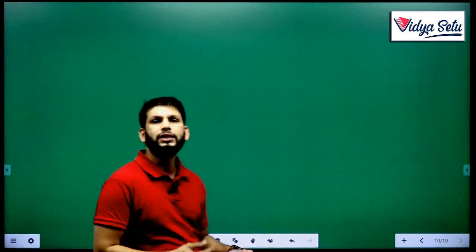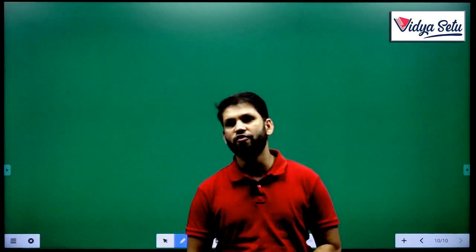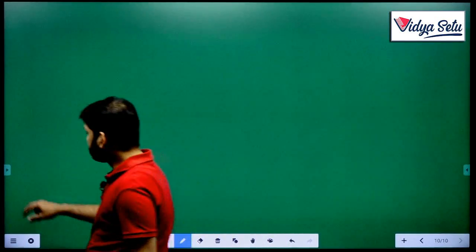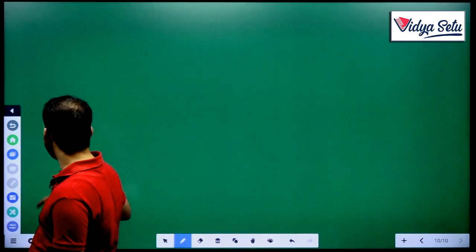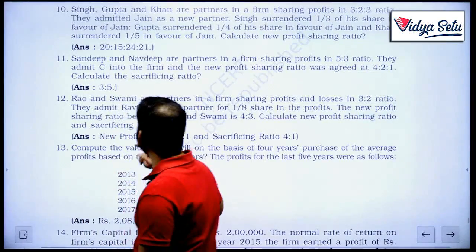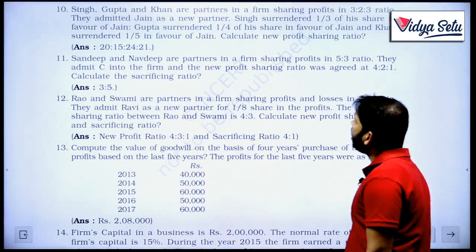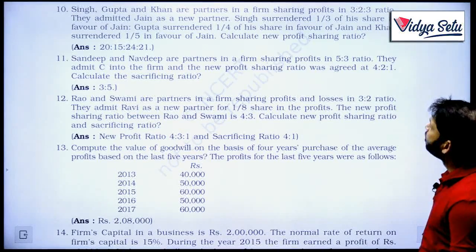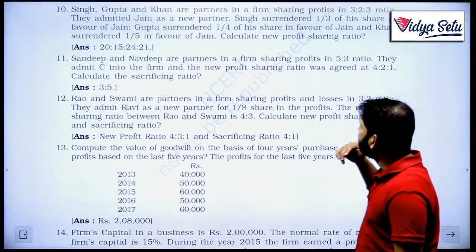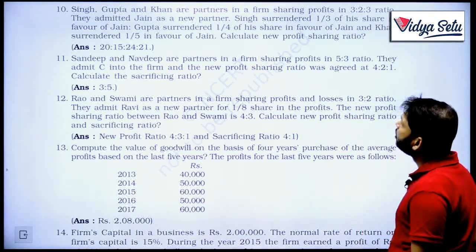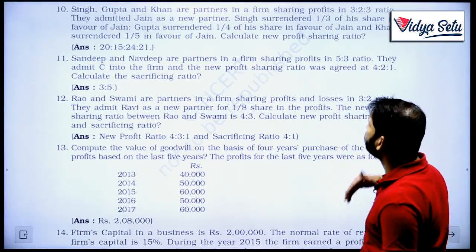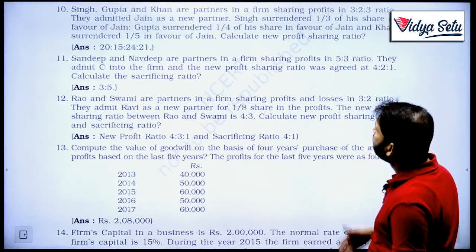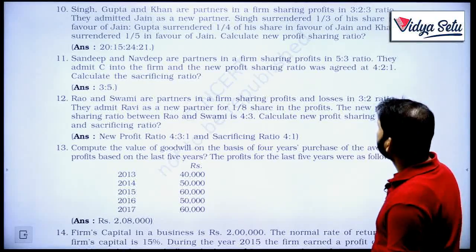Hello everyone, we are starting with question number 10 of our chapter number 3, partnership, admission of a partner. Singh, Gupta and Khan are partners in a firm sharing profits of 3 to 2 to 3. They admitted Jain as a new partner. Singh surrendered 1 third of his share in favor of Jain, Gupta surrendered 1 fourth of his share in favor of Jain, and Khan surrendered 1 fifth of his share in favor of Jain.